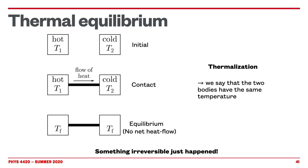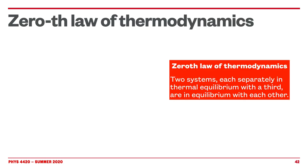This leads us to what's sometimes called the zeroth law of thermodynamics. It's called zeroth not because we use Python or C++ where we start counting at zero, but because it's a law that was added later just to clarify things. The zeroth law says that if you take two systems which are in thermal equilibrium and put them in contact with a third that is also in equilibrium, then the two original systems will be in equilibrium with each other.